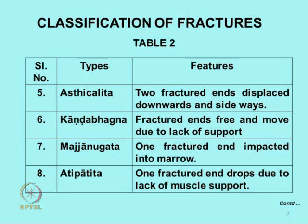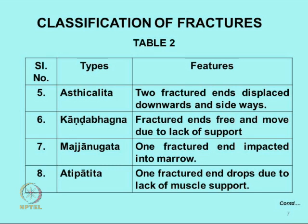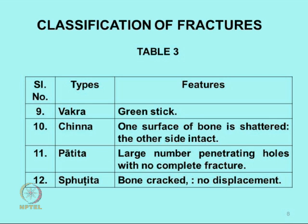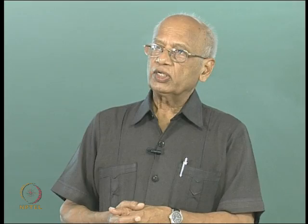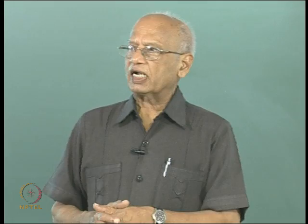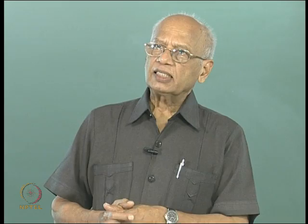Then there is Atipaathita — one fractured end is held up because a muscle is attached, another droops because no muscle is attached. Then there is Vakra or green stick fracture in children, where the bone is not very rigid and flexible — a curvature is produced. The next two, Chinna and Paathita, are unusual — not complete fractures, only one surface of the bone is damaged, possibly by an animal bite, while the other half is intact. And lastly, there is a hairline crack in the bone — not a complete fracture but treated like one.